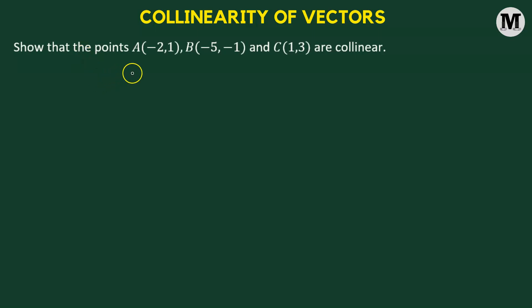In this problem, we need to show that the points A, B, and C are collinear. Let us begin.